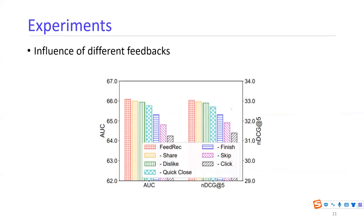In ablation studies on different types of feedbacks, we remove one feedback at a time and observe performance changes. We find that although some strong feedbacks such as share and dislike are very strong, their sparsity limits their contribution to final performance, while the most abundant skip and click feedbacks have the major contributions to model performance improvements.